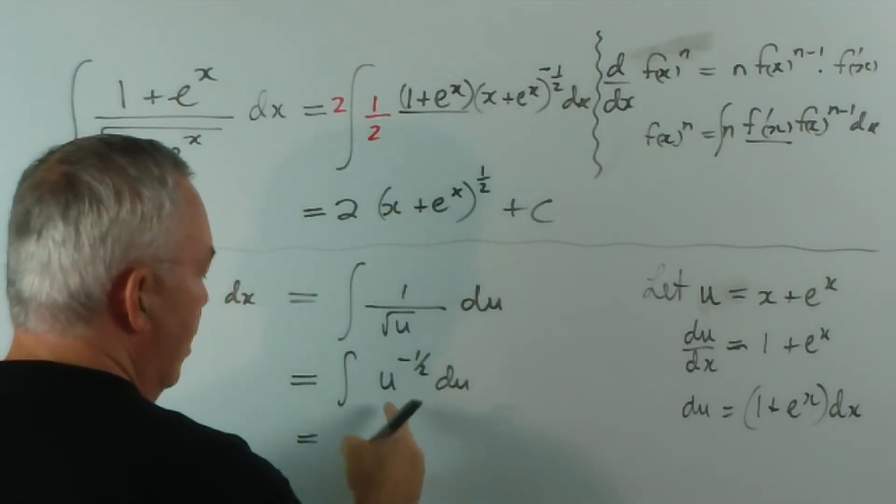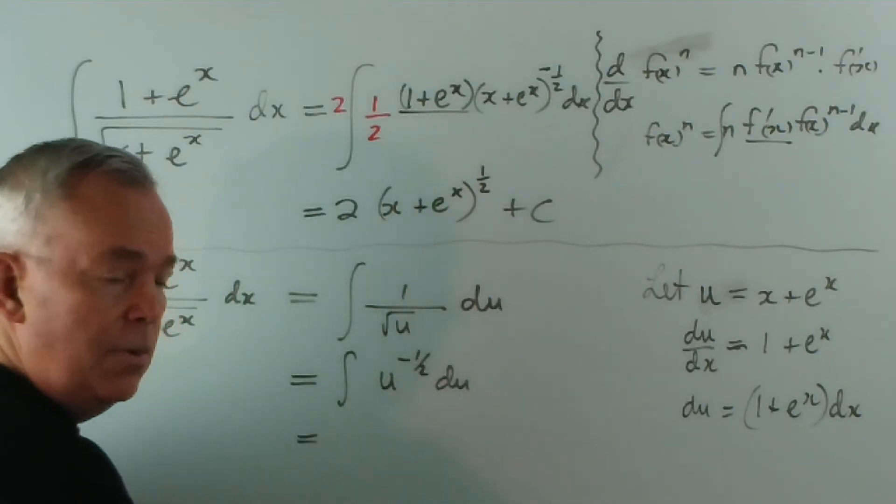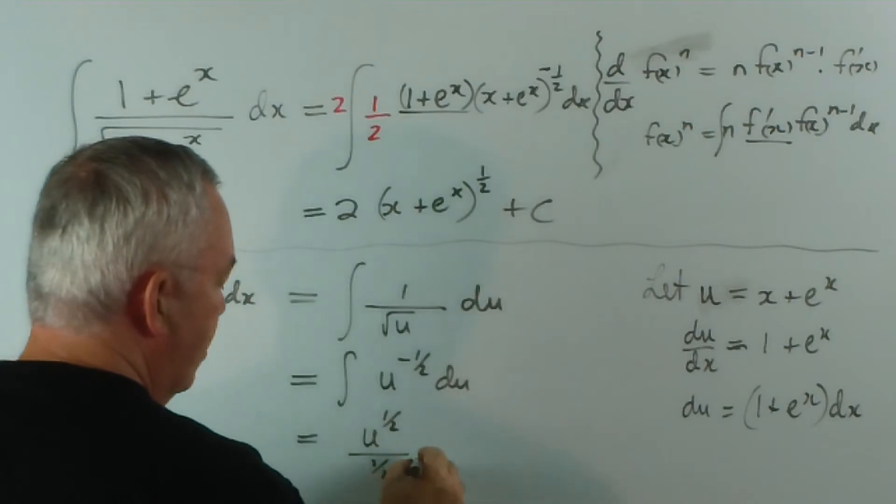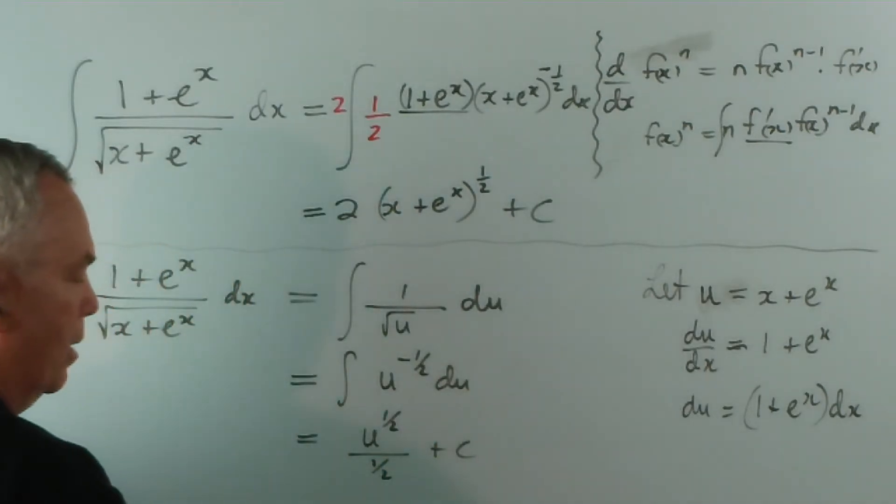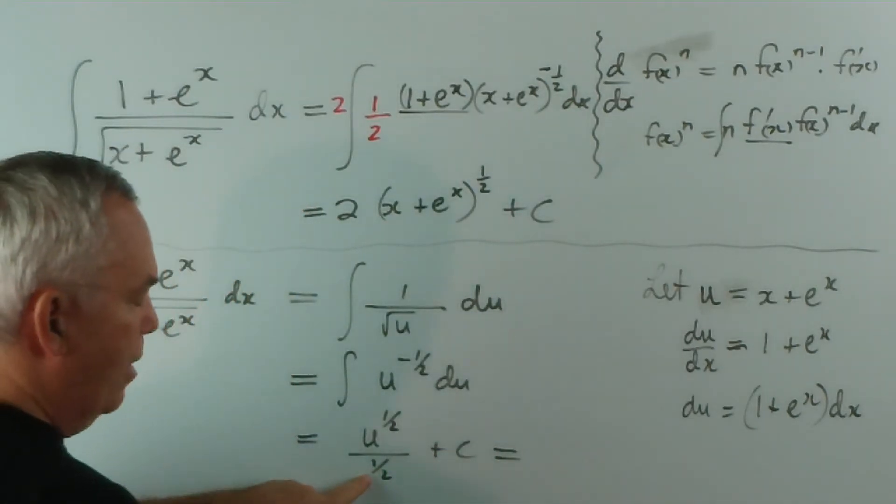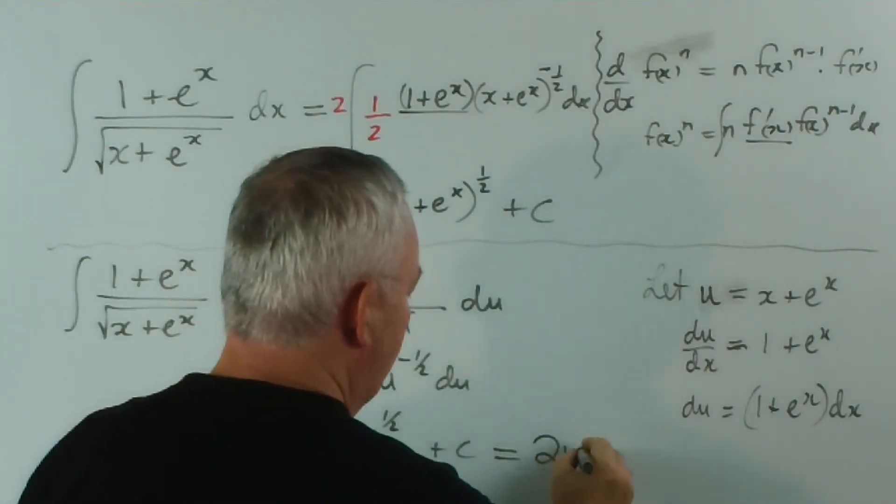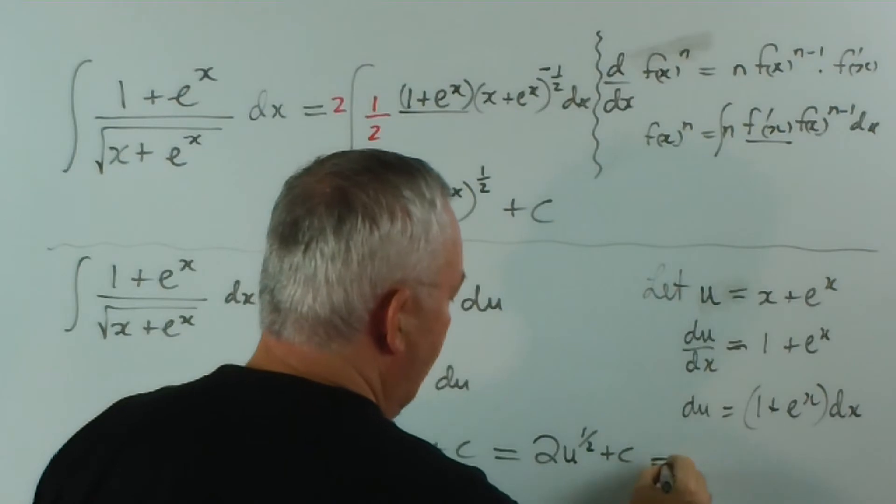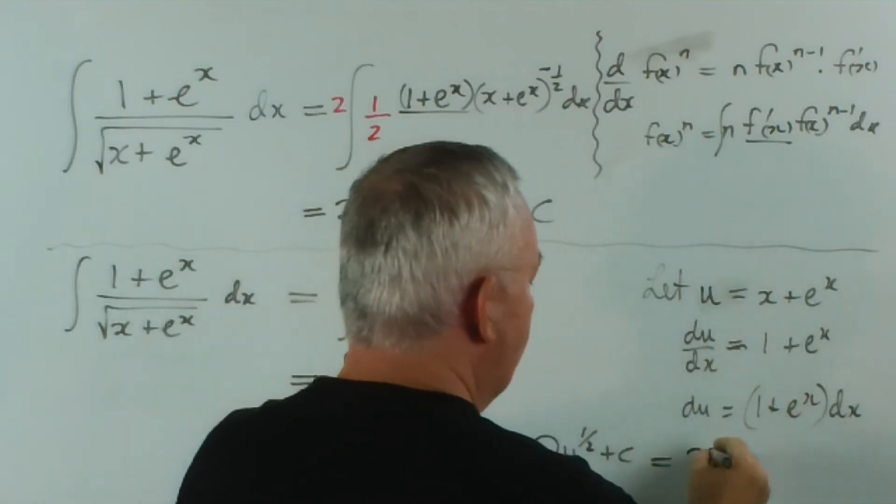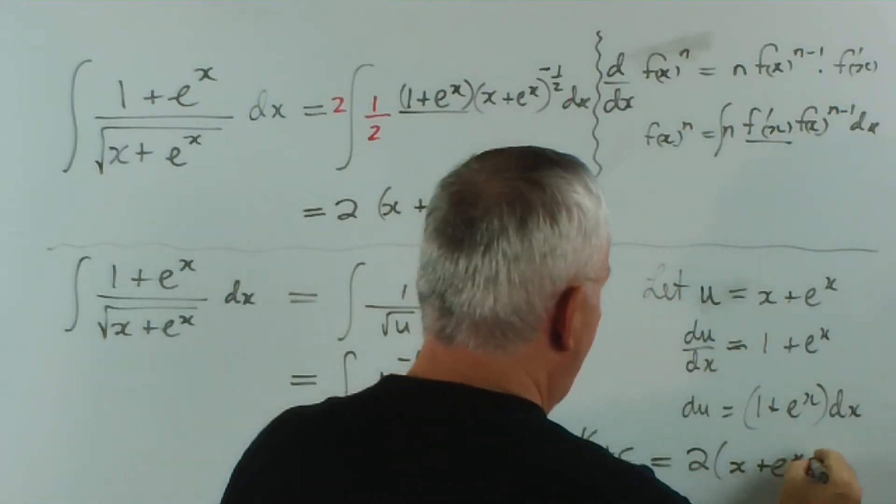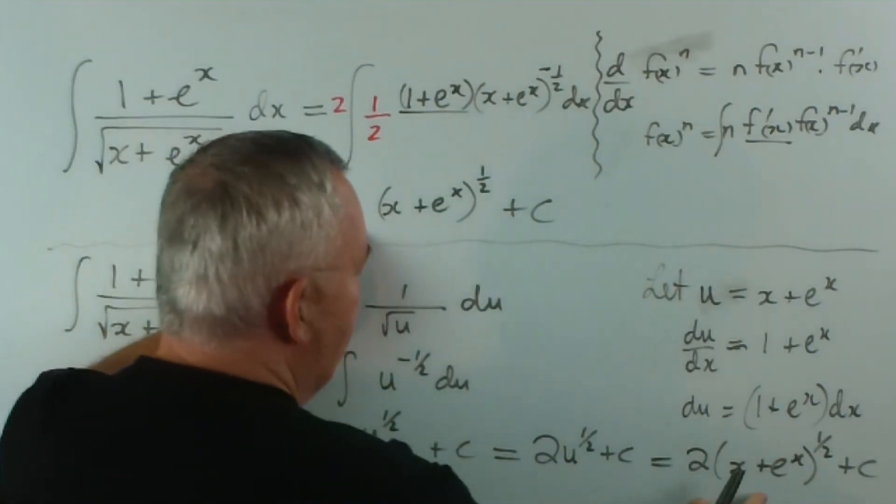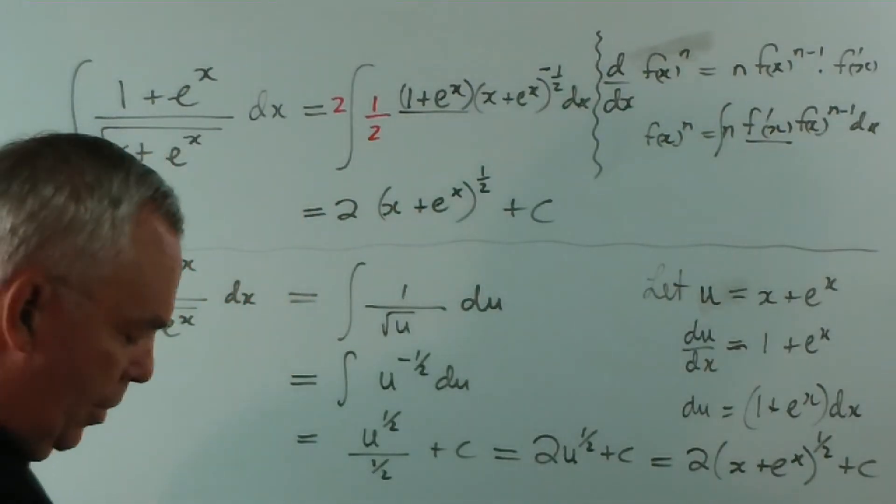So this is the integral of u to the negative half du, which is, this is just the power of u, so we add 1 to the power and get u to the half over 1 half plus c. Dividing by a half is like multiplying by two. And if I resubstitute for the u, I get two lots of, u was worth this, and there's the same result by using substitution.